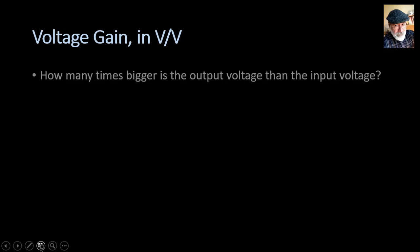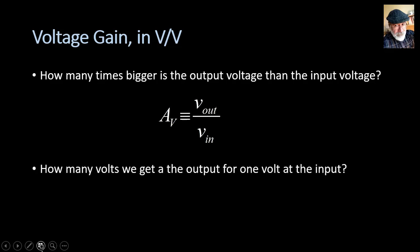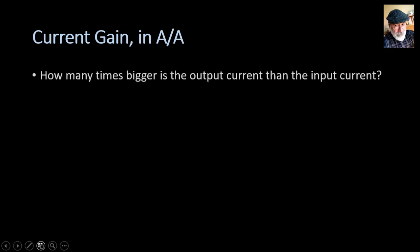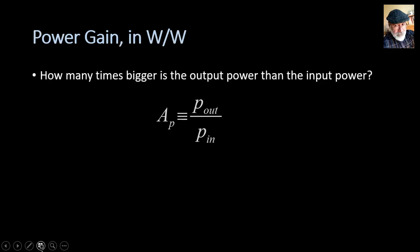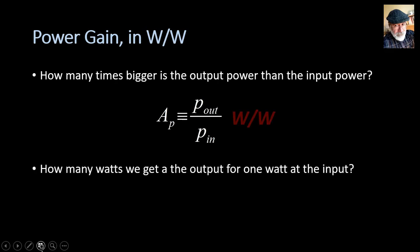Let's see them one by one. Voltage gain, in volts per volt: how many times bigger is the output voltage than the input voltage? That is the voltage gain — how many volts we get at the output for every volt applied at the input. The units are volts per volt. Current gain: how many times bigger is the output current than the input current? That is how many amps we get at the output for every amp applied at the input. And for power, the same idea but in watts per watt — how many watts we get at the output for every watt applied at the input.